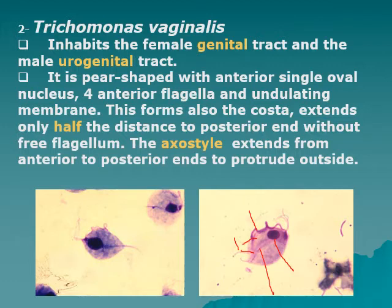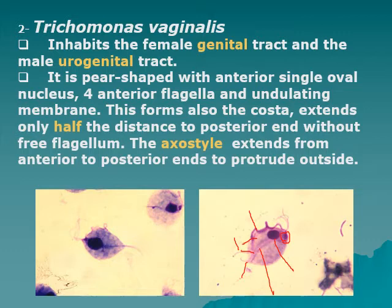The costa is apparent in the image, along with the axostyle — a thickening of the cytoplasm that maintains the spindle or pear shape of the cell. All flagella arise from a large blepharoplast located at the anterior end of the trophozoite. There is no cyst stage, and the axostyle extends from the anterior to posterior end, protruding outside.